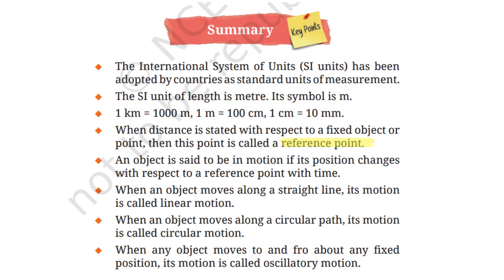When distance is stated with respect to a fixed object or point, then this point is called a reference point. An object is said to be in motion if its position changes with respect to a reference point with time. When an object moves along a straight line, its motion is called linear motion. When an object moves along a circular path, its motion is called circular motion. When any object moves to and fro about any fixed position, its motion is called oscillatory motion.